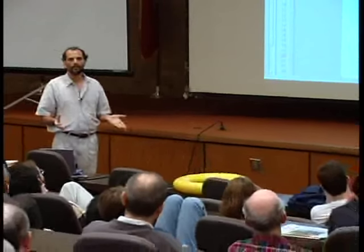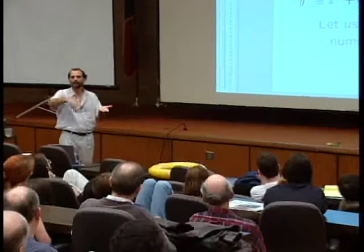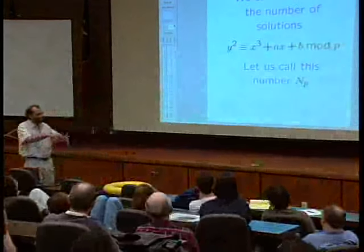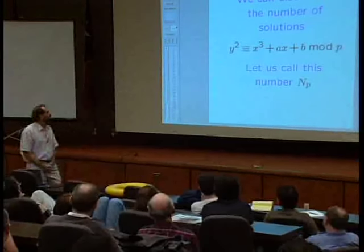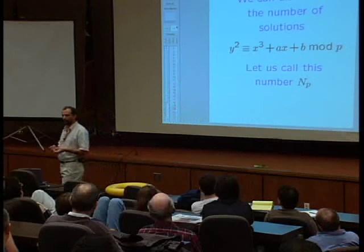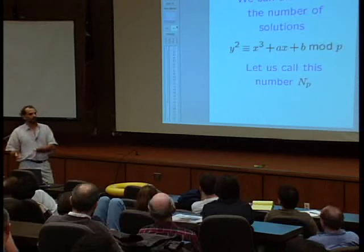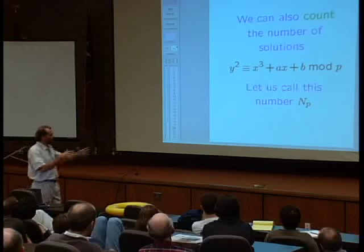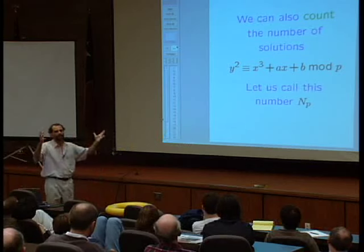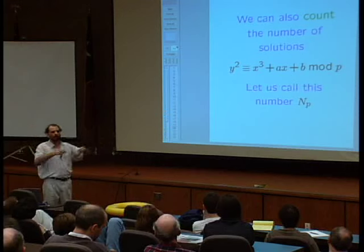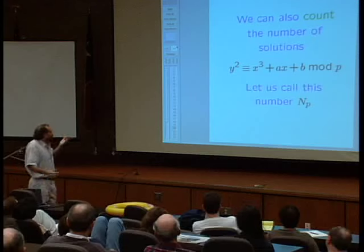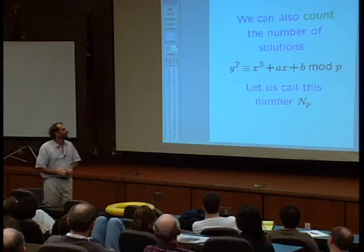If you do geometry modulo a prime p, you don't have pictures that are really useful. The points are a finite collection of solutions — x and y run from 0 to p−1, so at most there'll be p² solutions. But that is way off from the actual truth. I like to think that if you look at something modulo p, pictures are replaced by counting. One thing we can do is count how many solutions there are. We start with our elliptic curve, pick a prime like 17, look at the equation modulo 17, and count the solutions. We see how many there are — let's call that number N_p.